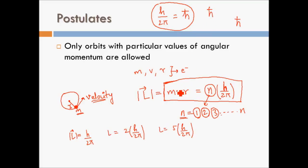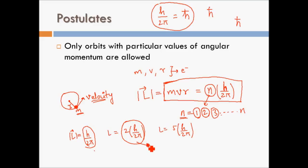Remember: mvr = n × h/2π. This means the product of mass, velocity, and radius is always a discrete value — not continuous. The angular momentum will not take any value between h/2π and 2h/2π; similarly it won't take any value between 2ℏ and 3ℏ. The electron skips over the values in between on the number line.